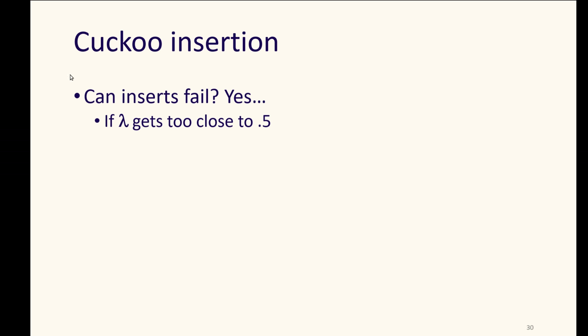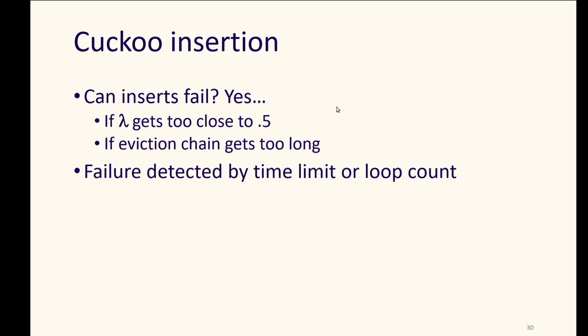So insertions can fail if our load factor is too high. For example, if both of our lists were almost full or all full, then of course we could fail to insert because we'll just keep evicting back and forth. We usually make a limit that the load factor in either of the lists can be no higher than 0.5 to avoid that. And if the eviction chain gets too long, we may have some boundary that we put on it. We detect that failure either by the amount of time that we've taken trying to place something or by some count on how many times we're allowed to loop in evicting data.